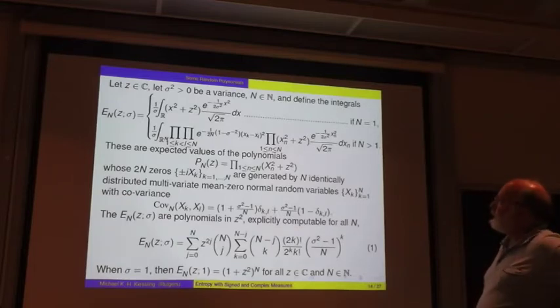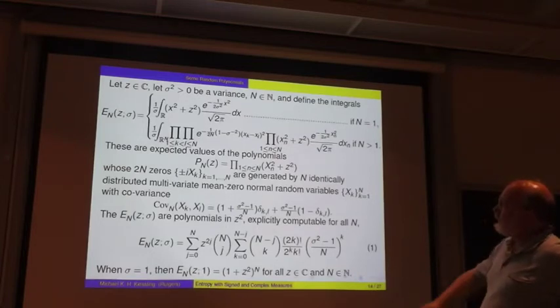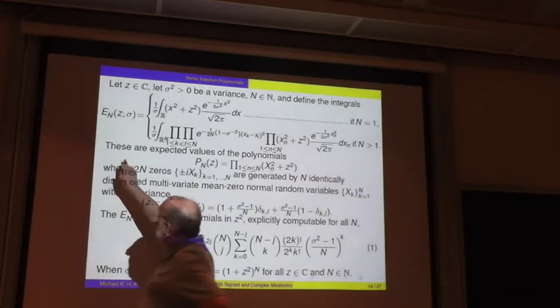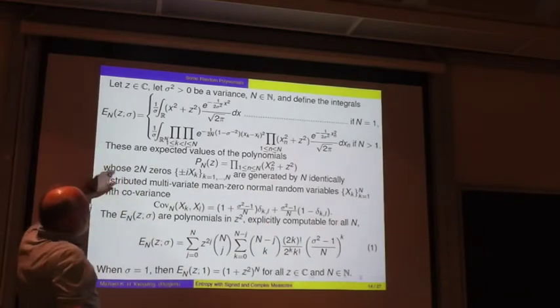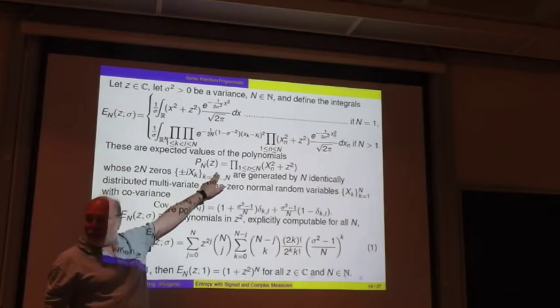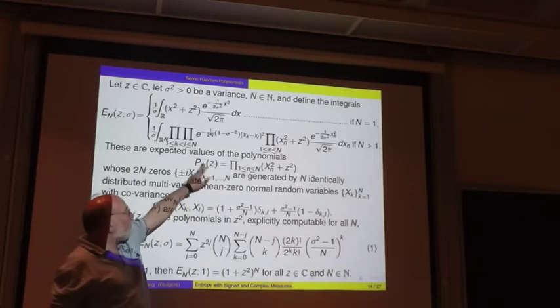Right? So now you look at such expressions. So the E's you see there, right? These guys, these are expected values of these polynomials. Right? C is a complex variable.